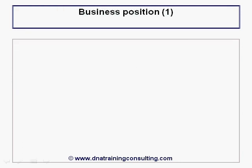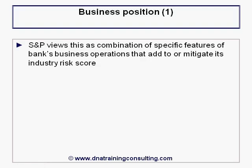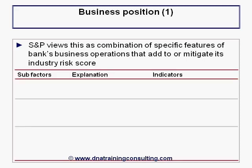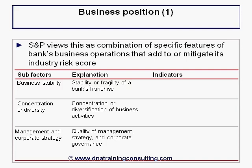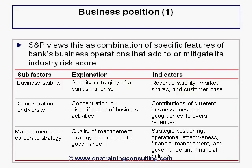We begin with business position. S&P views this as the combination of specific features of the bank's business operations that add to or mitigate its industry risk score, and groups these features into three sub-factors: business stability, concentration or diversity, and management and corporate strategy. The next two columns of the relevant table provide an explanation of what each of these means and list indicators for evaluating each sub-factor. For each bank, the strength of its business position is scored using one of six standard descriptors based on conclusions about its strength relative to its peer group.